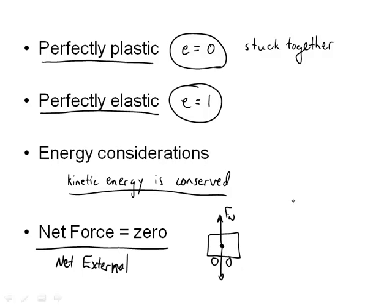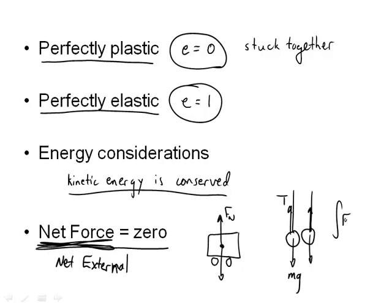The same thing holds true if an object is hanging and strikes another hanging object. There's a gravitational force mg and an upward tension force, but the net force acting on these objects is still zero. Even though there are external forces, the net force is the critical issue. That has to be zero, and then the integral of F dt, where F is the net force, equals zero — so momentum before and after the collision is conserved.